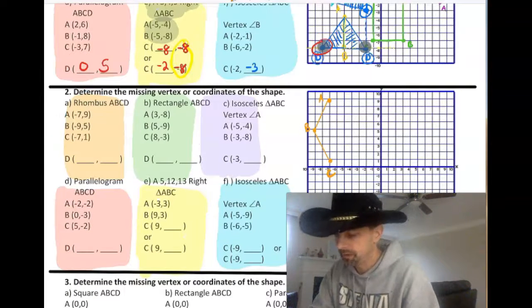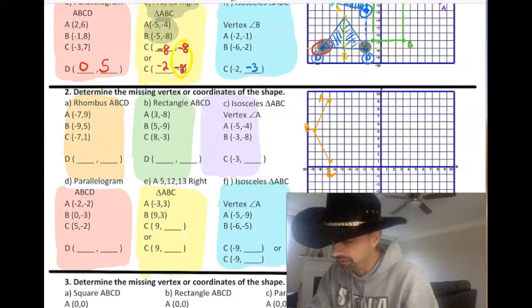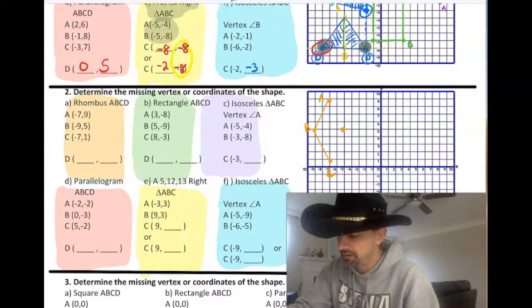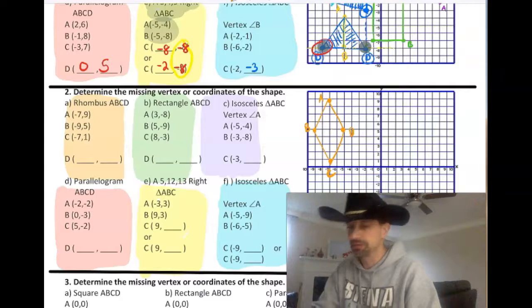Letter A. To get from B to C, I went down 4 over 2. So I'm going to go down 4 over 2 from A. And that's going to be my point D. There's my rhombus.